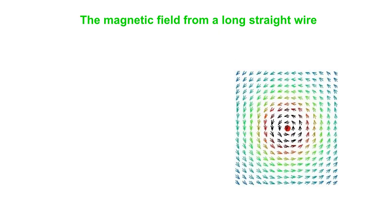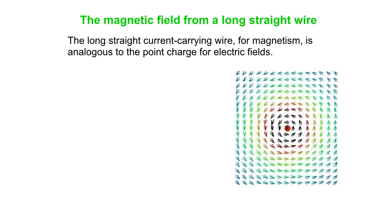Here's a picture of the magnetic field from a long straight wire. This is kind of analogous to the point charge. A long straight wire is analogous to the point charge for electric fields. In this case, we've got this red dot in the middle.